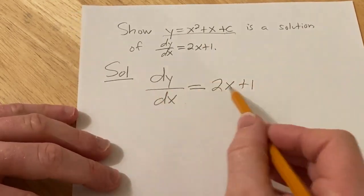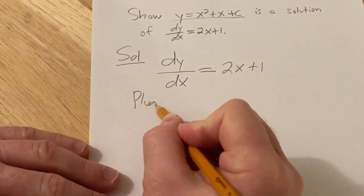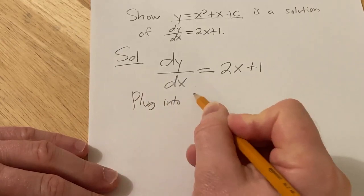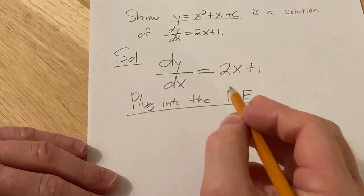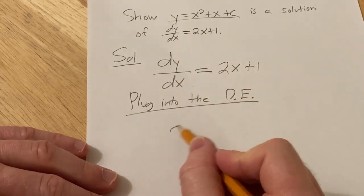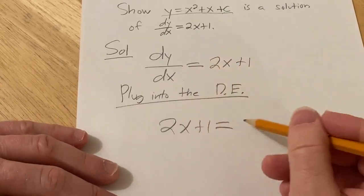So now if you plug this into your differential equation, plug into the DE, what do you get? Well, dy dx is 2x plus 1, and that's equal to 2x plus 1.